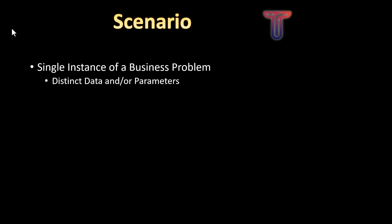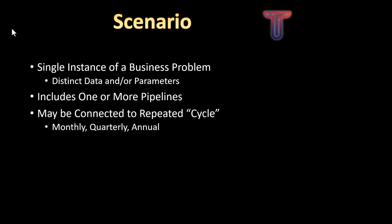A scenario can be thought of as a single instance of a business problem. It may have distinct data or distinct parameters, and will include one or more pipelines. It may be connected to a repeated cycle, as in many business processes applications are executed on a regular basis — perhaps monthly, quarterly, or annually.